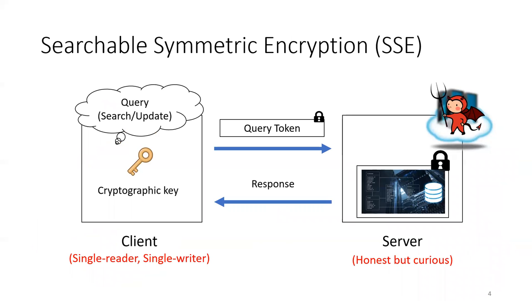Searchable Symmetric Encryption, or SSE in short, is a special class of encryption schemes that allow querying and updating symmetrically encrypted databases in an efficient manner while revealing very little information to an honest but curious server.